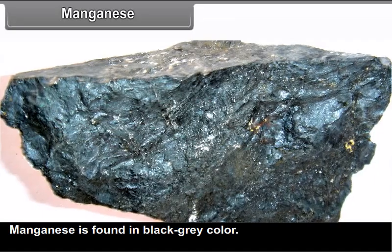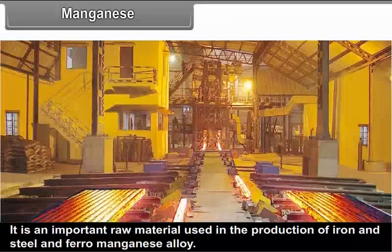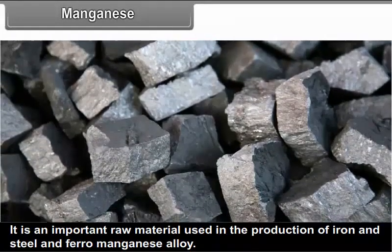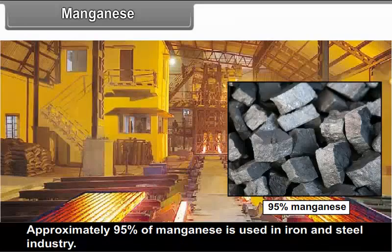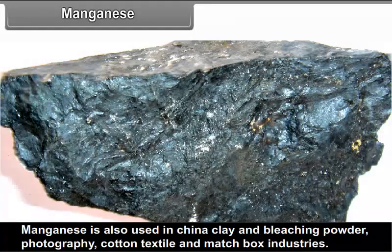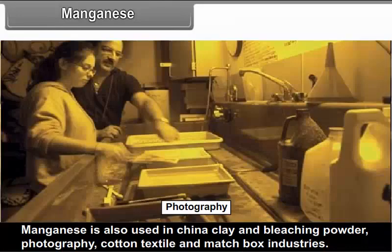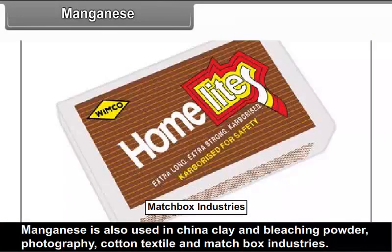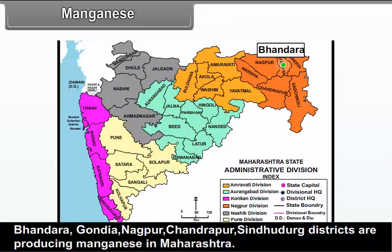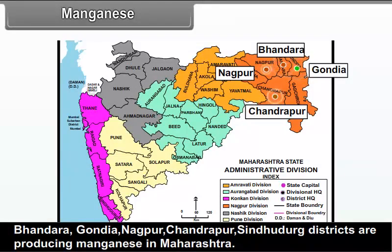Manganese: Manganese is found in black-grey color and is an important raw material used in the production of iron and steel and ferro-manganese alloy. Approximately 95% of manganese is used in the iron and steel industry. 10 kg of manganese is used for the production of 1 ton of steel. Manganese is also used in china clay and bleaching powder, photography, cotton textile and matchbox industries. Maharashtra is a leading producer of manganese in India. Bhandara, Gondiya, Nagpur, Chandrapur and Sindhudurg districts produce manganese in Maharashtra.